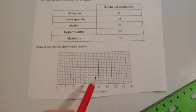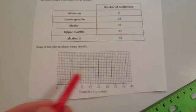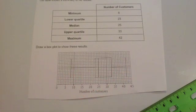I've then joined up the lower quartile, the median, and the upper quartile in this box shape, and I've drawn my two whiskers out to the lowest and to the highest values. That's how you draw a box and whisker diagram.